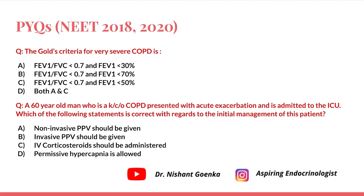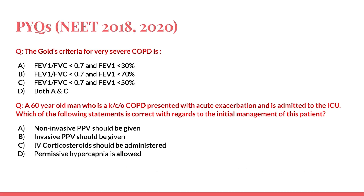The second question: a 60-year-old man, a known case of COPD, presented with acute exacerbation and is admitted to the ICU. Which of the following statements is correct regarding initial management? Options: A — non-invasive PPV should be given; B — invasive PPV should be given; C — IV corticosteroids should be administered; D — permissive hypercapnia is allowed.